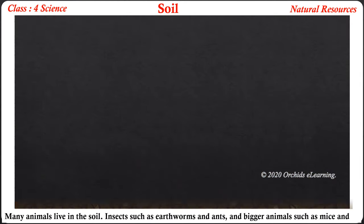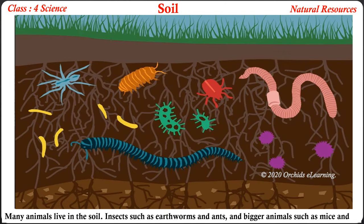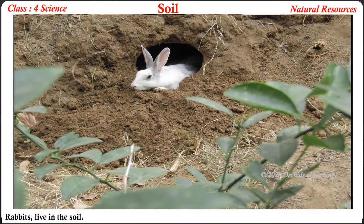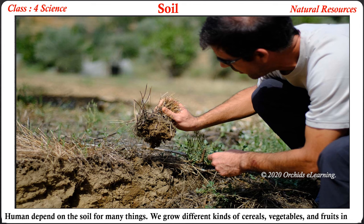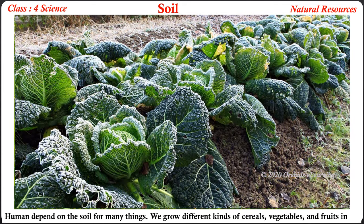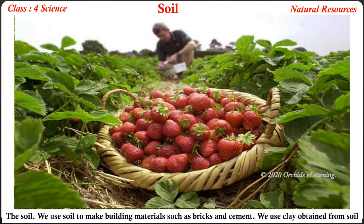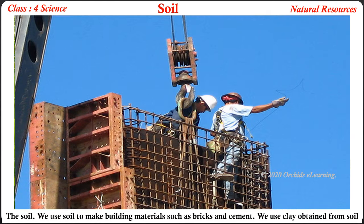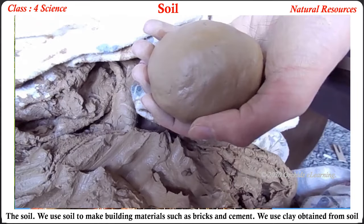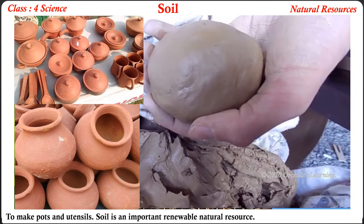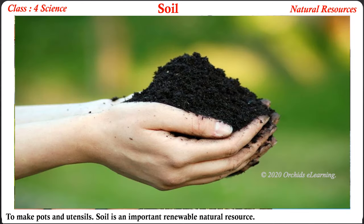Many animals live in soil. Insects such as earthworms and ants, and bigger animals such as mice and rabbits, live in soil. Humans depend on soil for many things. We grow different kinds of cereals, vegetables, and fruits in the soil. We use soil to make building materials such as bricks and cement, and we use clay obtained from soil to make pots and utensils. Soil is an important renewable natural resource.